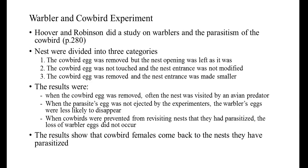The Warbler and Cowbird Experiment. Hoover and Robinson did a study on warblers and the parasitism of a cowbird. Nests were divided into three categories: the cowbird egg was removed but the nest opening was left as it was; the cowbird egg was not touched and the nest entrance was not modified; and finally, the cowbird egg was removed and the nest entrance was made smaller. The results showed that when the cowbird egg was removed, the nest was often visited by an avian predator. When the parasite's egg was not ejected, the warbler's eggs were less likely to disappear. And when cowbirds were prevented from revisiting nests they had parasitized, the loss of warbler eggs did not occur. The results show that cowbird females come back to the nest if they had parasitized it.